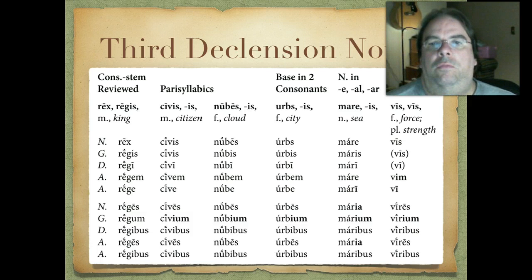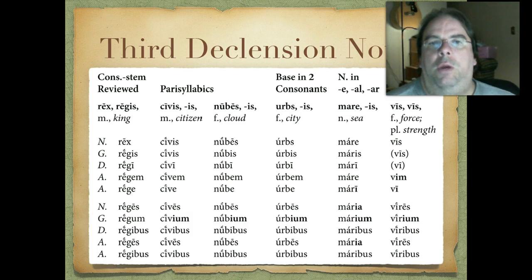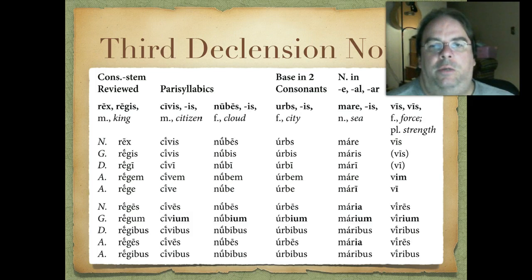Then there's the irregular vis, vis, which means force or strength. This is best just memorized: vis, vis, vi, vim, vi. In the plural: vires, virium, viribus, vires, viribus. It is a third declension I-stem, but it's easier just to memorize that one.